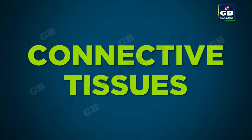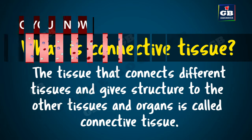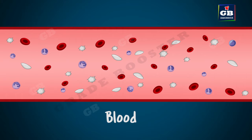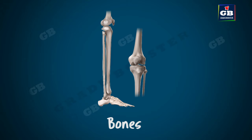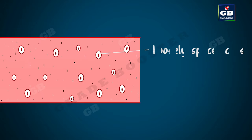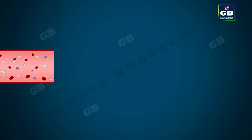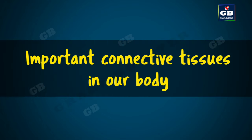Now let us learn about connective tissues. What is connective tissue? The tissue that connects different tissues or organs and gives structure to other tissues and organs is called connective tissue. Blood, bones, and cartilage are examples of connective tissue. Blood is a fluid connective tissue that connects the different parts of the body. Bone is another connective tissue that gives shape and support to the body. The cells of the connective tissue are loosely spaced and embedded in an intercellular matrix. The matrix of blood is like a fluid, whereas the matrix of bone is very hard.